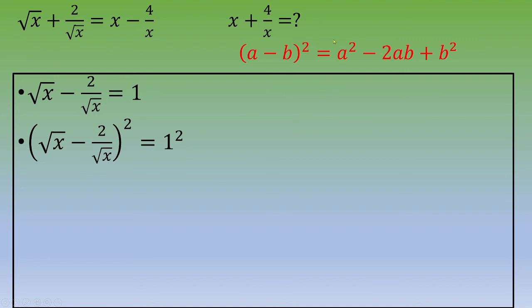You can expand this quantity between parentheses according to the remarkable identity a minus b squared equals a squared minus 2ab plus b squared. So you end up with x minus 2 times square root of x times 2 over square root of x plus 4 over x equals 1.